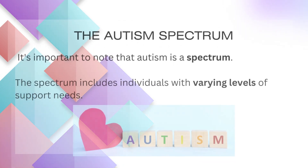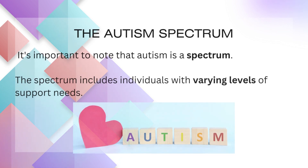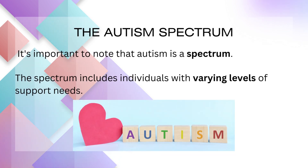It's important to note that autism is a spectrum, meaning it encompasses a wide range of abilities and challenges. The spectrum includes individuals with varying levels of support needs, from those who are highly independent to those who require more intensive support.